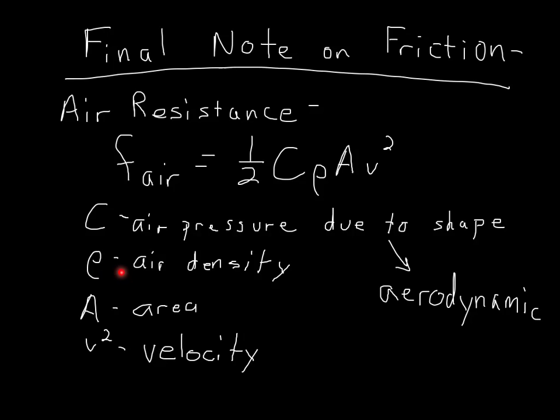Rho, this curly P, is the air density. That's how dense air is. That is 1.3 kilograms per cubic meter. A is the cross-sectional area that's running into the wind. And V squared is how fast you're going. So to get some practice with all these concepts of friction,